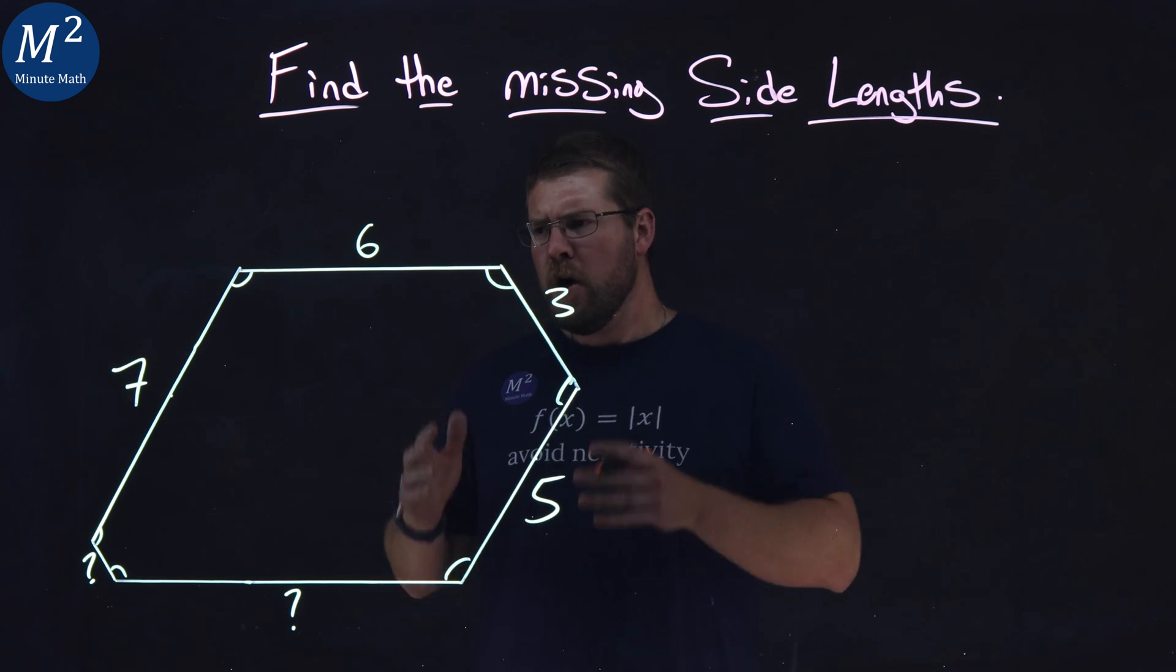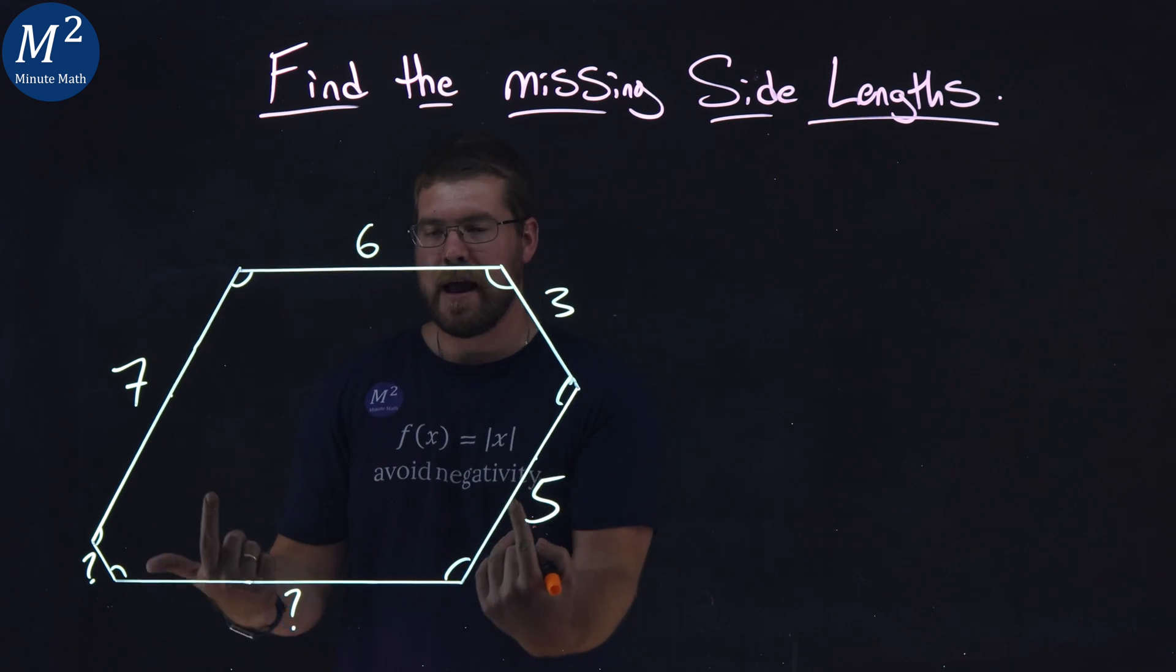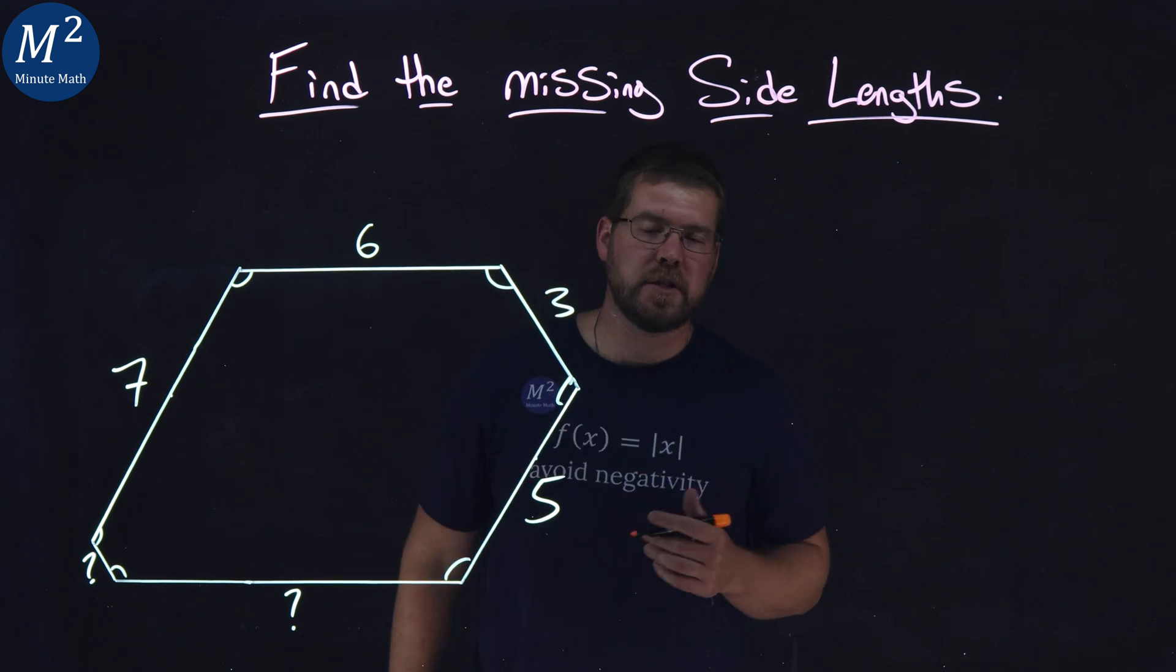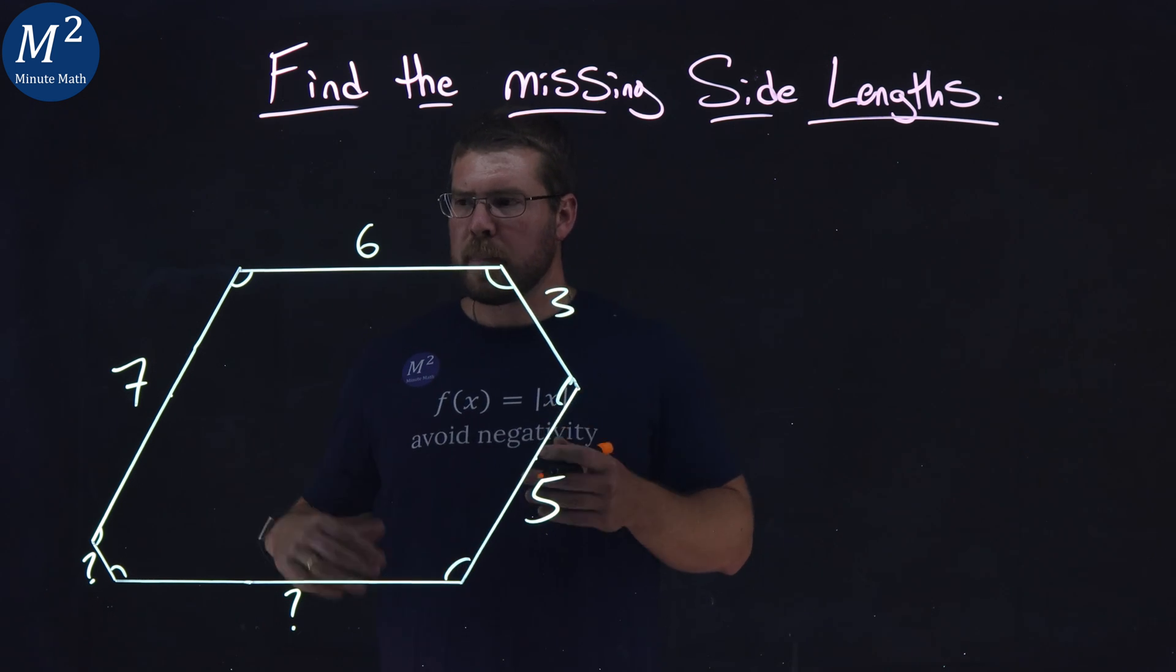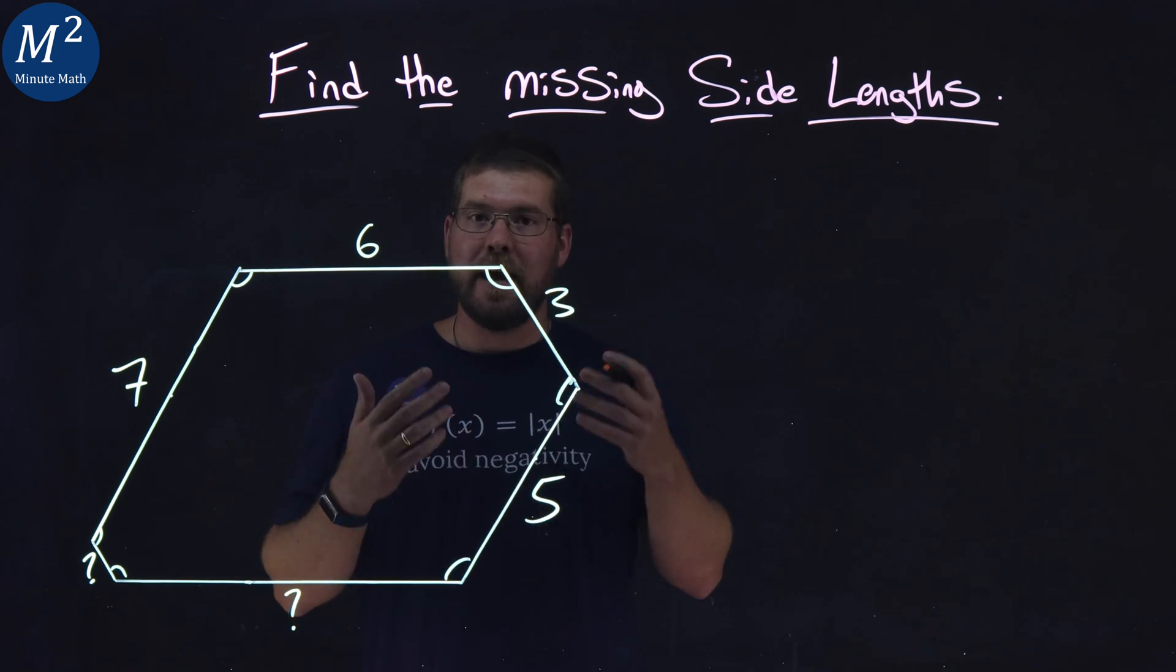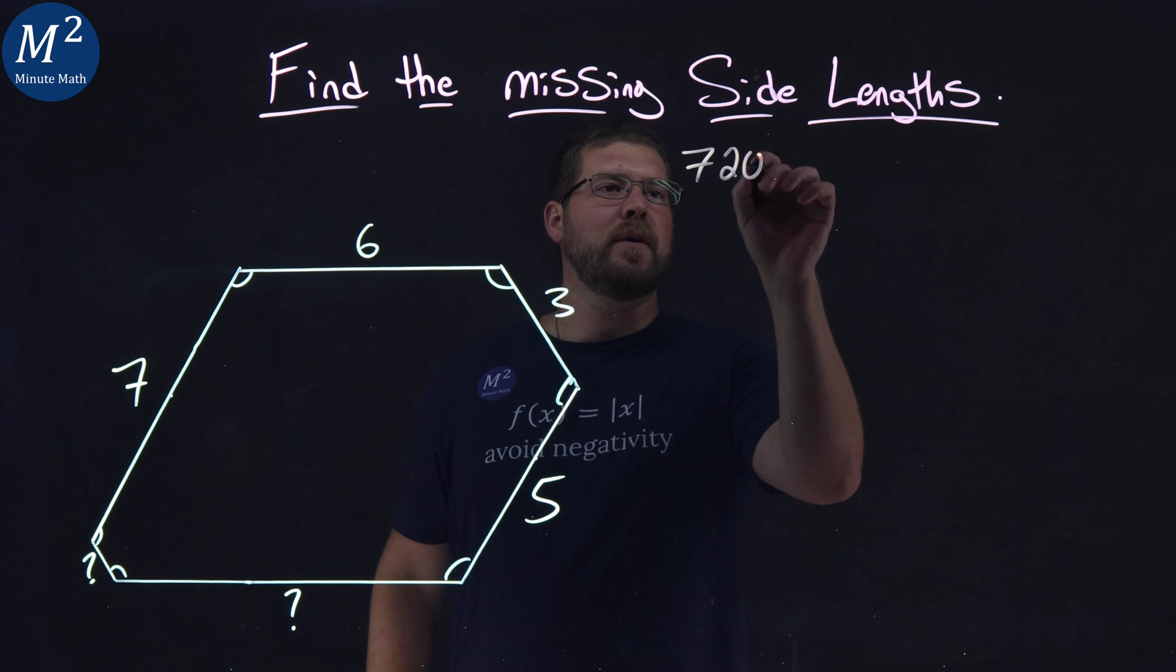All right. So like I said, we have one, two, three, four, five, six side lengths. All interior angles are congruent, good to know. So let's go see if we can figure out what the interior angles are. Well, if all interior angles are congruent, and we set a six-sided figure, a hexagon, we know the interior angles add up to be 720 degrees.